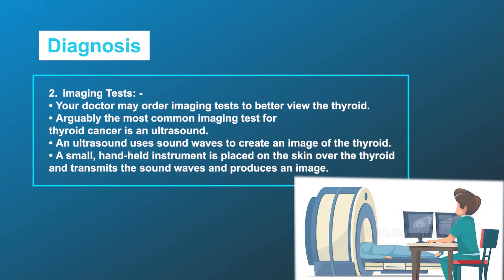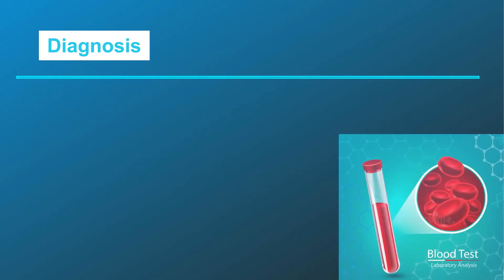Second, imaging tests: your doctor may order imaging tests to better view the thyroid. Arguably the most common imaging test for thyroid cancer is an ultrasound. An ultrasound uses sound waves to create an image of the thyroid; a small handheld instrument is placed on the skin over the thyroid and transmits the sound waves to produce an image.